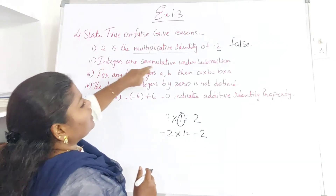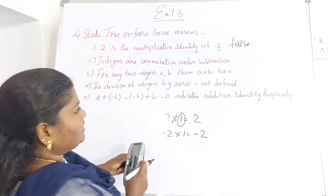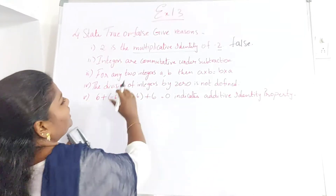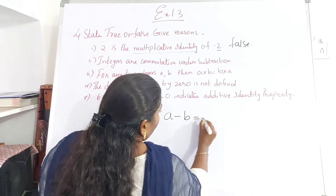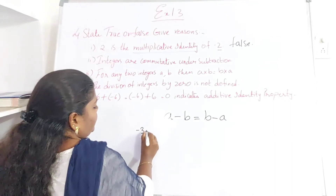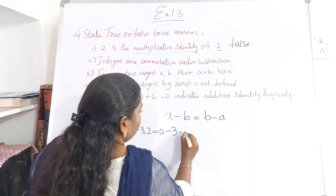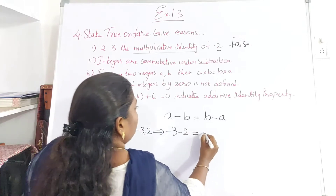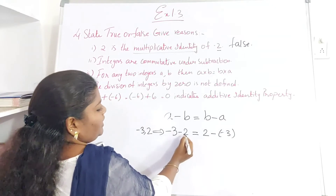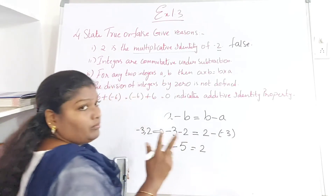Next: integers are commutative under subtraction. We take two integers and check whether it is commutative. For commutativity under subtraction, a minus b should equal b minus a. Let us take minus 3 and 2. Substituting: minus 3 minus 2 should equal 2 minus (minus 3). The left side gives minus 5. The right side: 2 minus (minus 3) gives plus sign. So this statement is false.